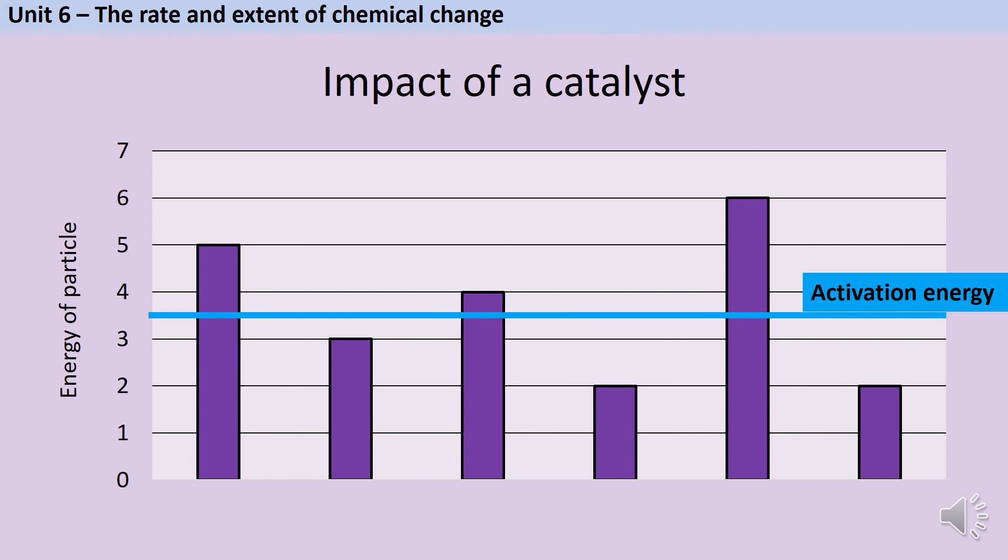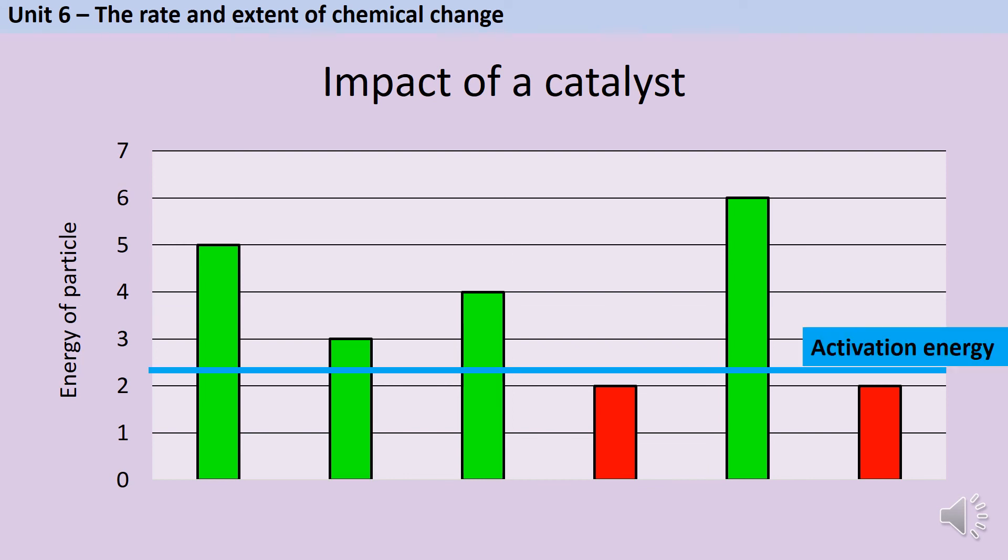We've already used this graph to represent particles that can and can't react. Here you can see again that I have three particles that do have the activation energy, and then three that don't. My three green particles are able to successfully collide and react, but the red particles are not. If I add a catalyst to this reaction, I don't change the amount of energy that each particle has, but now an extra fourth particle that before didn't have the activation energy does, because the activation energy is lower.